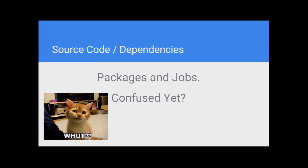That tarball contains what we call packages. Packages are your source code and any of their dependencies. If you want to run a Java application, you'll have a jar file or your Java code, plus the JRE. Those are what we call packages in our release. And then the next thing in that tarball we call jobs. Jobs are scripts — just shell scripts that will run your packages. Java dash jar, whatever. You have a shell script and BOSH will take it and run it.